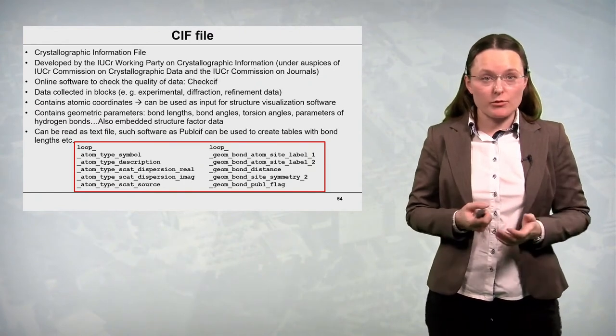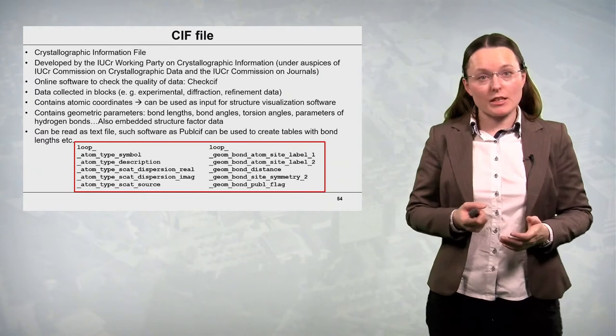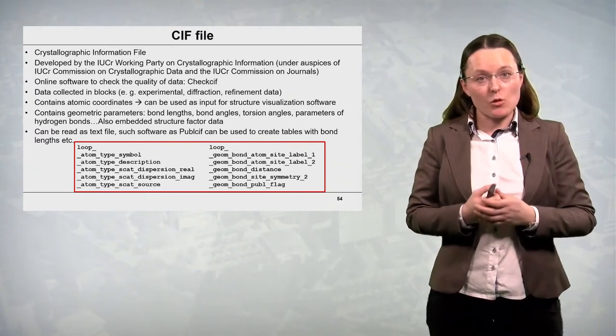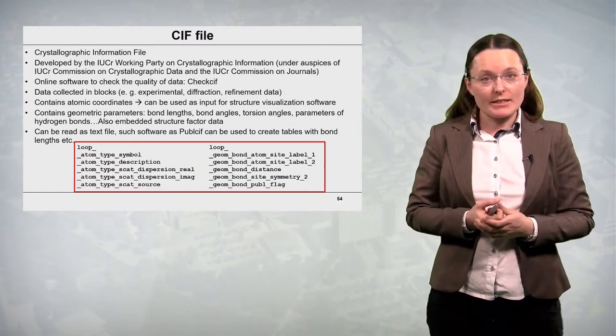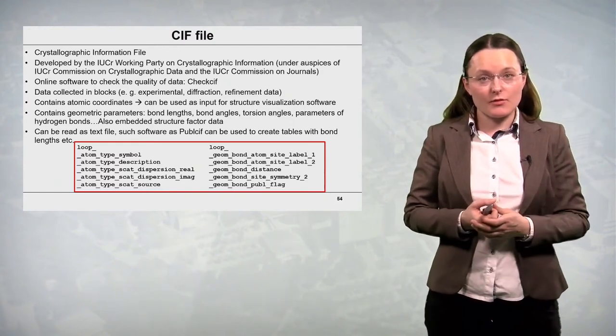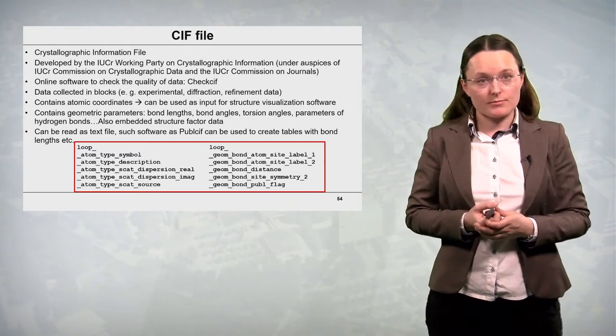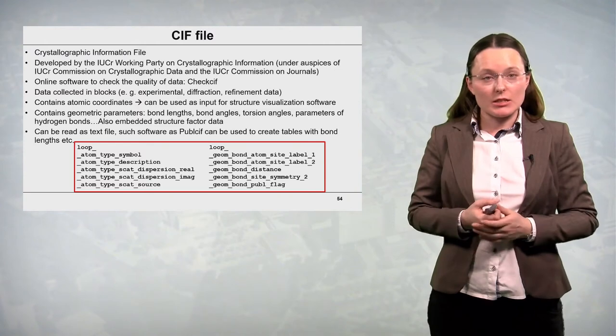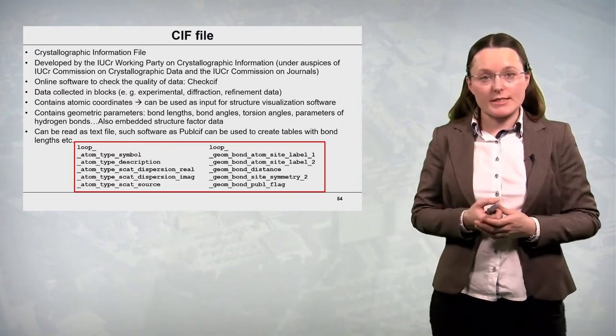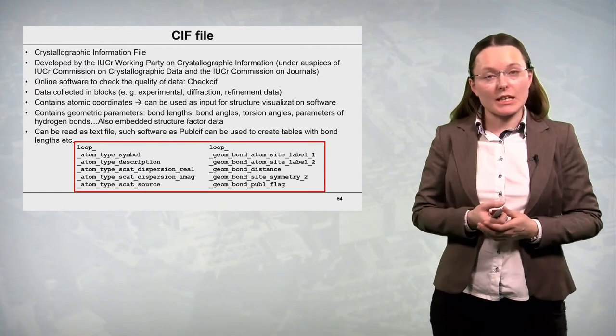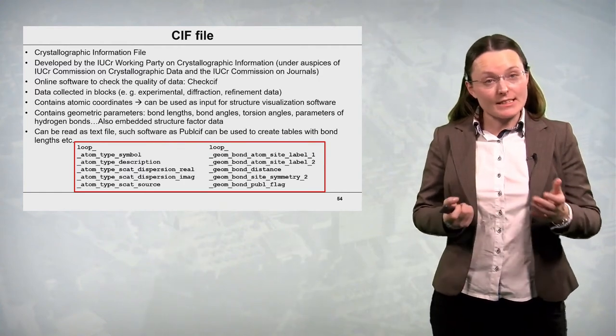There is online software which allows to check the quality of data with CIF file as an input. This is the so-called checkCIF and the checkCIF generates alerts if there are some warning points. In the CIF file data is collected in different blocks for instance experimental diffraction or refinement data.